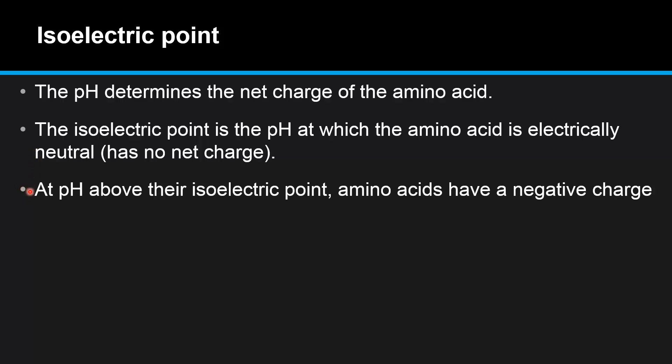At pH above the isoelectric point amino acids have a negative charge. At pH below the isoelectric point amino acids have a positive charge.